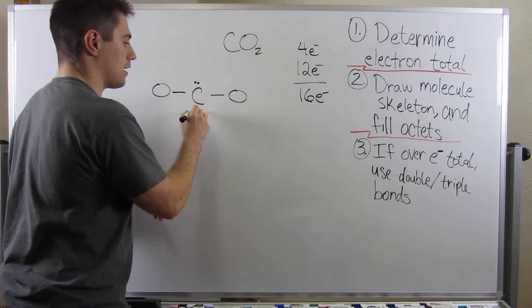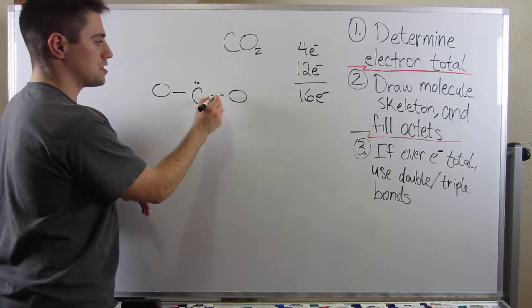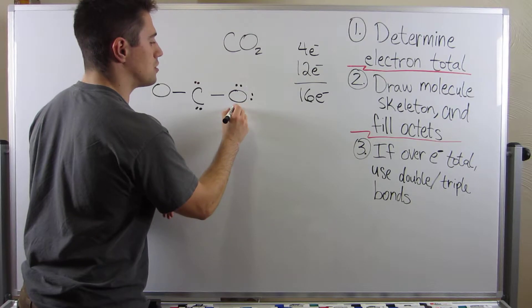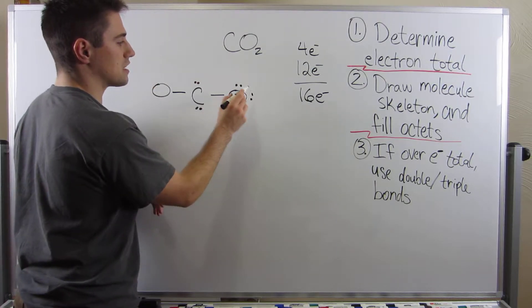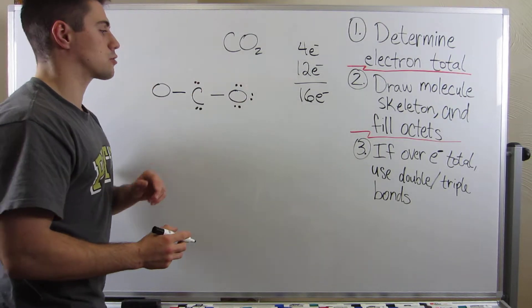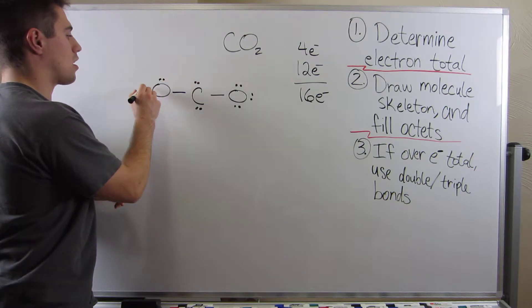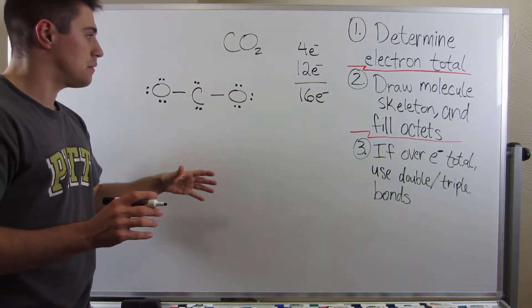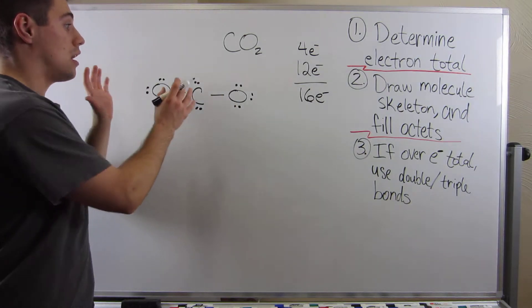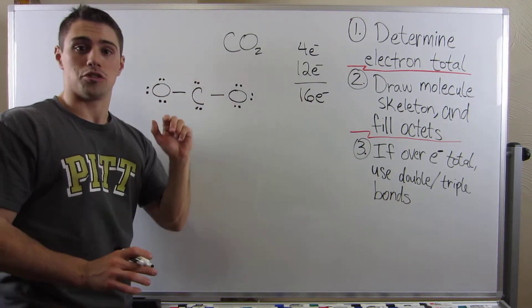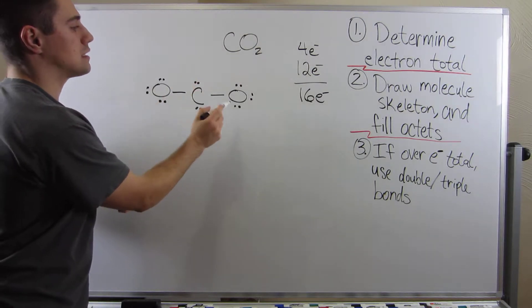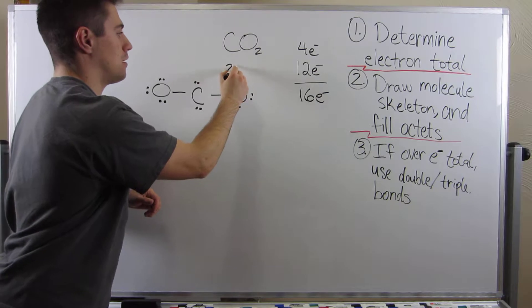I'm going to give eight electrons to carbon, two, four, six, eight. I'm going to fill oxygen's octet, two, four, six, eight. Remember, bonds count as two electrons. And then I will do the same thing over here. So we've drawn the skeleton, we've filled the octet. Now let's figure out if our electrons here match up with the ones we're allowed to use. Two, four, six, eight, ten, twelve, fourteen, sixteen, eighteen, twenty. Damn.